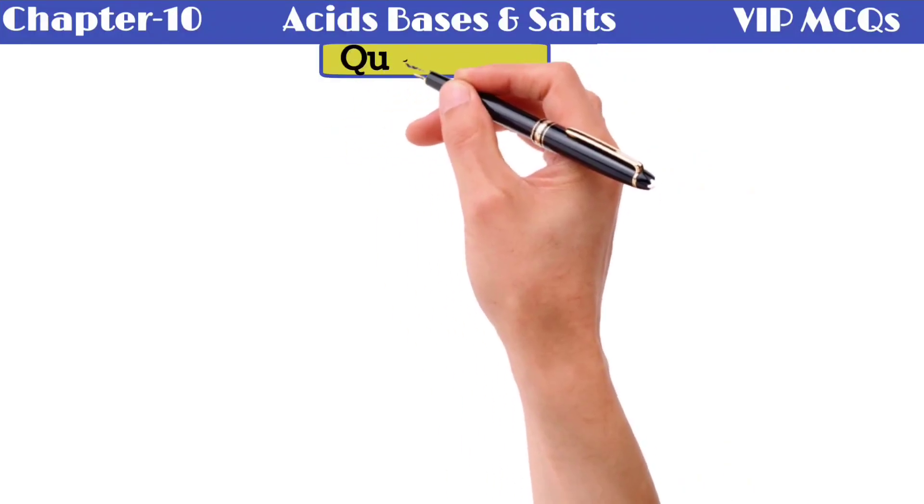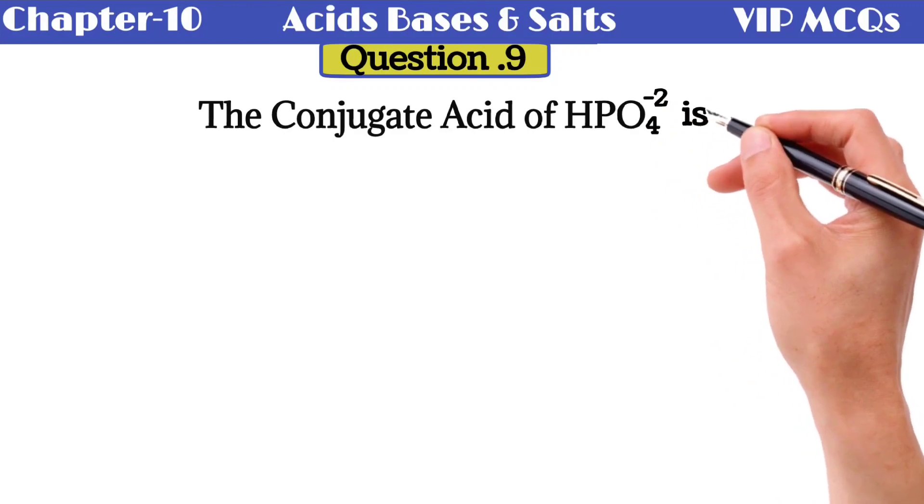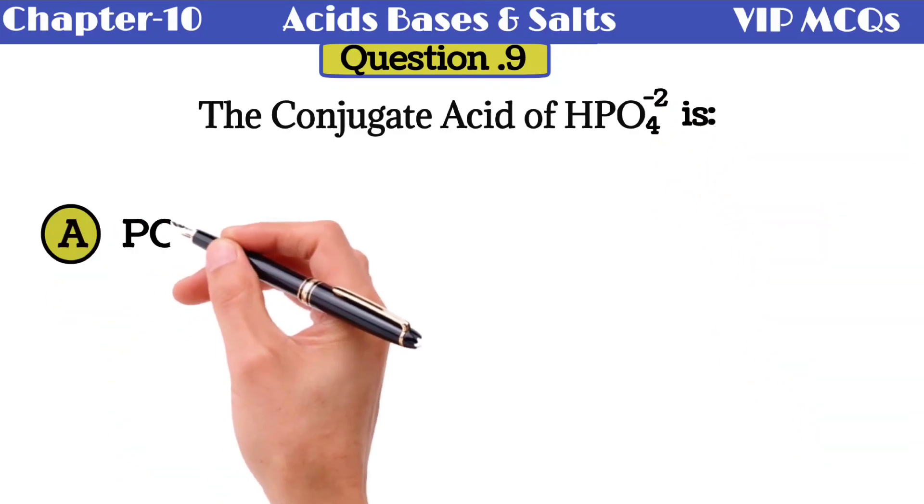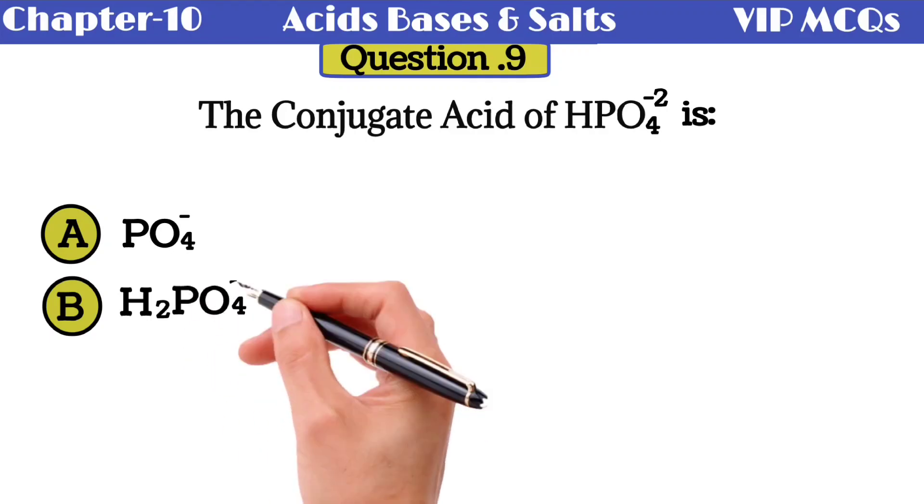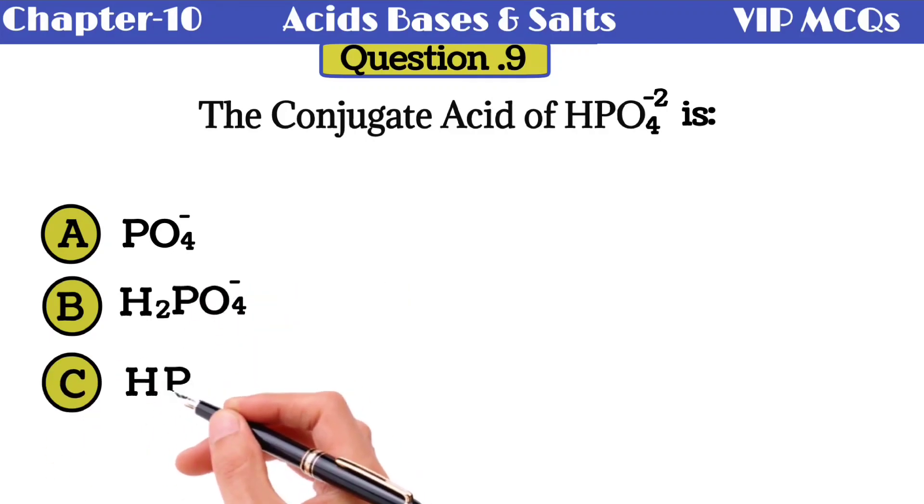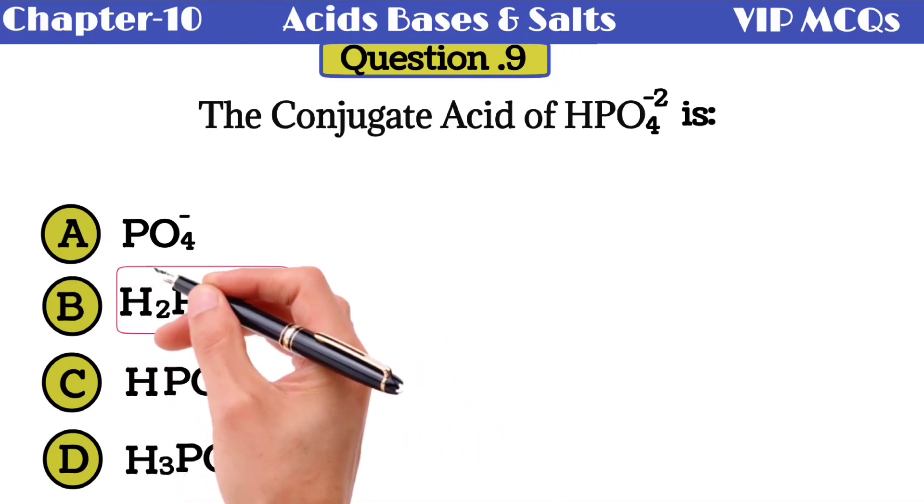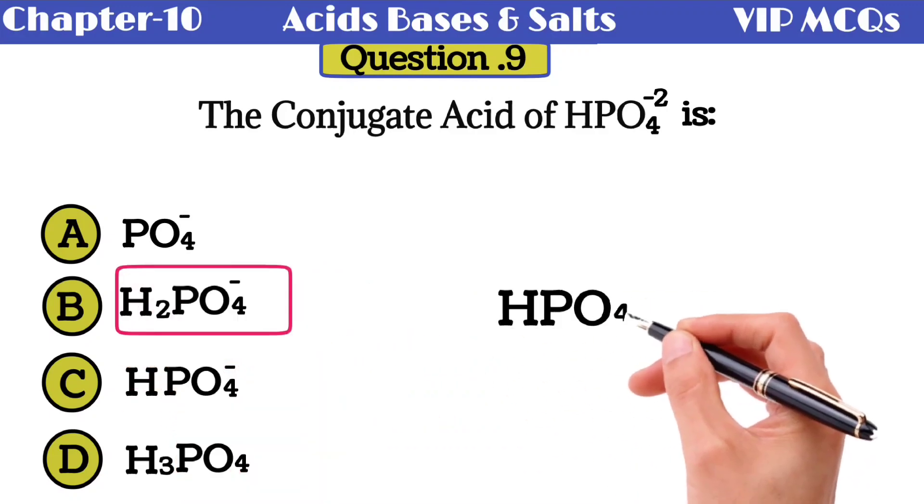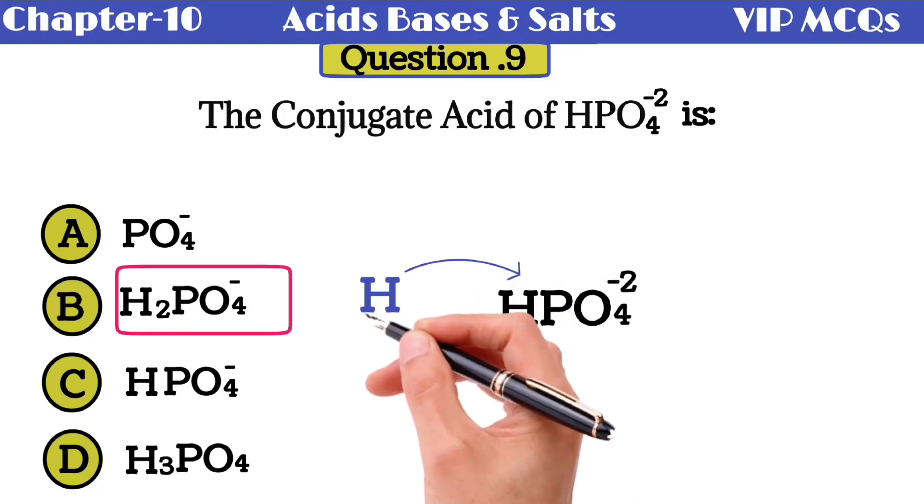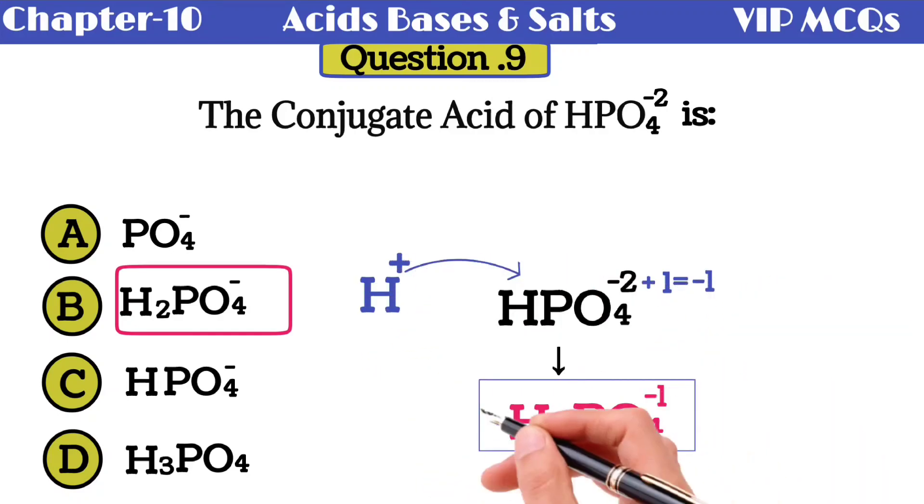Question number 9: the conjugate acid of HPO4-2 is - option A PO4-, option B H2PO4-1, option C HPO4-1, option D H3PO4. The correct option is H2PO4-1. I have a trick to know the conjugate acid of any substance. Just add H-ion into the substance. Also add plus 1 charge to overall charge of substance. You will get conjugate acid.